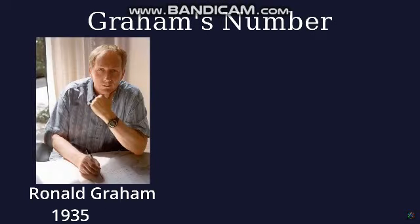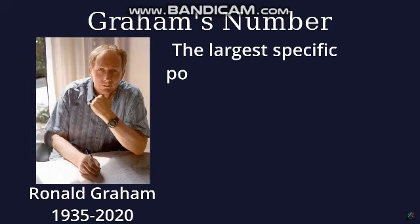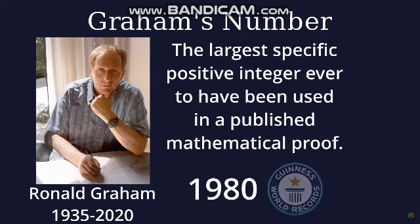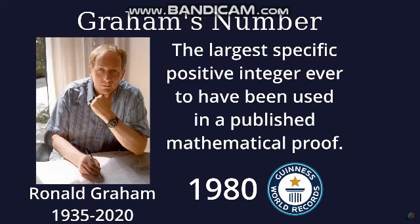Graham's number was used by Ronald Graham as a simplified explanation of the upper bounds of the problem he was working on. At the time of its introduction, it was the largest specific positive integer ever to have been used in a published mathematical proof. In 1980, Graham's number was described in the Guinness Book of World Records. Since then, many bigger numbers have appeared in mathematical proofs. For example, Graham's number is extremely small in comparison to TREE(3).